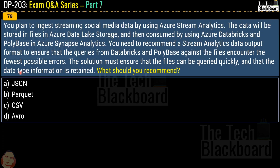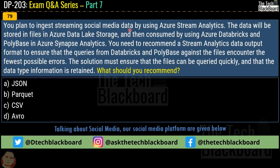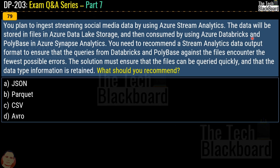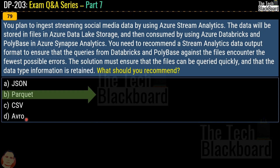Question 79: you plan to ingest streaming social media data using Azure Stream Analytics. The data will be stored in files in Azure Data Lake Storage and consumed by Azure Databricks and Polybase in Azure Synapse Analytics. You need to recommend a Stream Analytics data output format to ensure queries from Databricks and Polybase encounter the fewest errors, files can be queried quickly, and data type information is retained. Options are JSON, Parquet, CSV, or Avro. The correct answer is option B, Parquet.